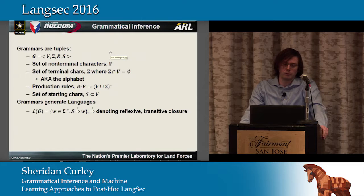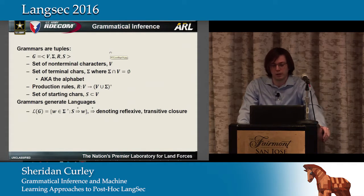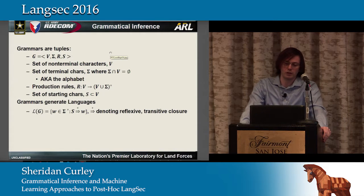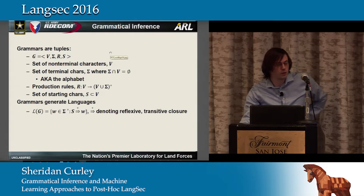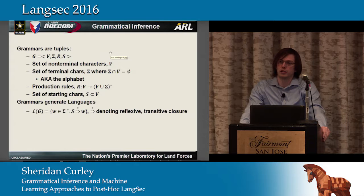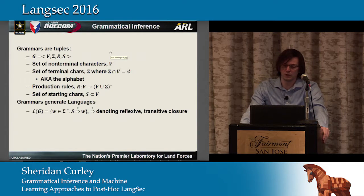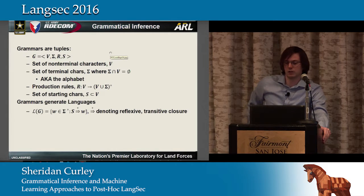Starting from first principles in grammatical inference, we can think of grammars as a tuple where we consider a set of non-terminal characters, a set of terminal characters disjoint from the non-terminals. The terminal characters can be thought of as the alphabet — what you actually see in a word. There's also a set of production rules that gets us from the non-terminals to the Kleene star set of terminals and non-terminals, and a set of starting characters which is a subset of the non-terminals.